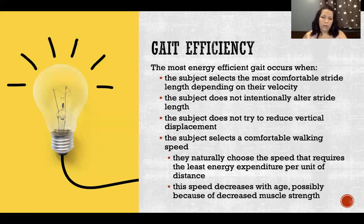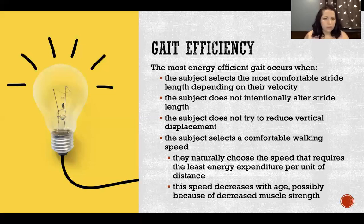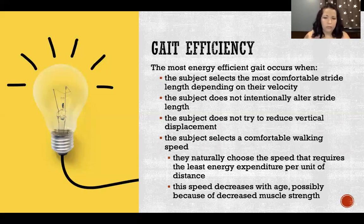Walking speed decreases with age — that naturally selected comfortable walking speed tends to slow as we get older, possibly due to decreased muscle strength or muscle mass. It doesn't have to decrease with age, and there could be other reasons, but across the total population on average we see a slower comfortable walking speed.